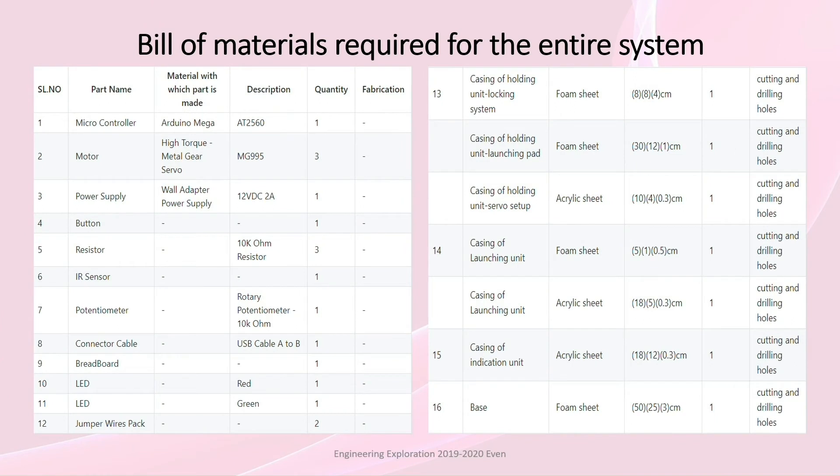Bill of material for the entire system. We require Arduino mega, servo motors, power supply, button, resistors, IR sensor, potentiometer, connector cable, breadboard, LED, jumper wire pack, foam sheet and acrylic sheet of different dimensions to make different parts of the machine.